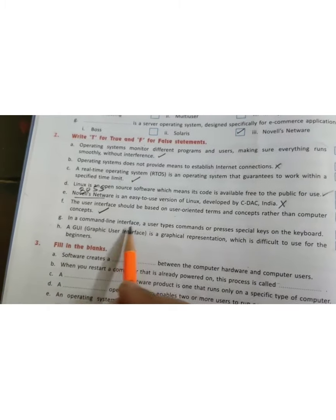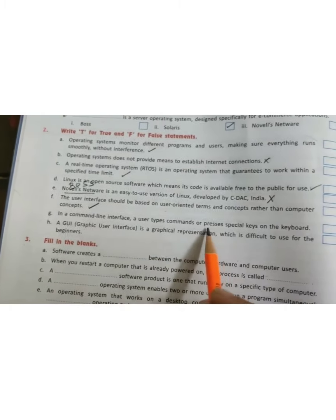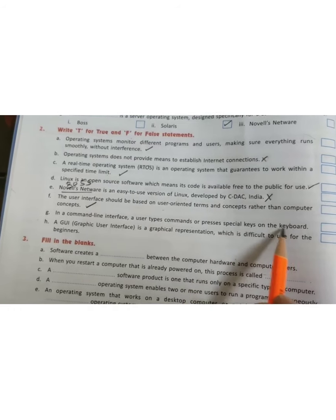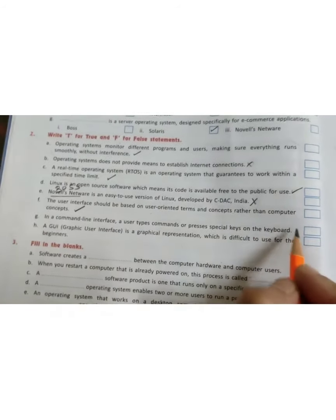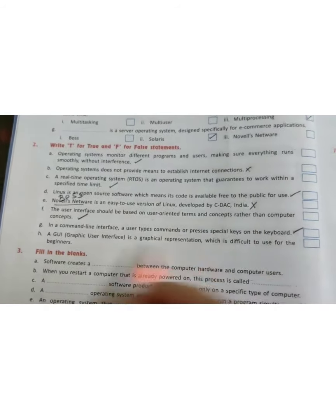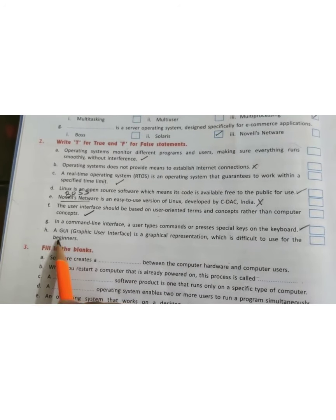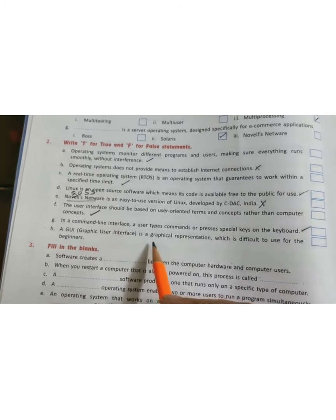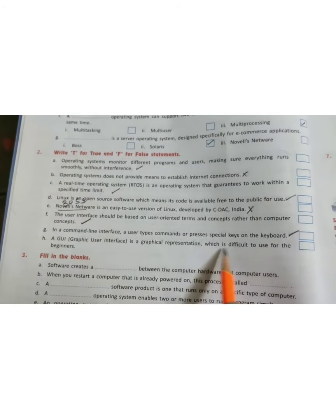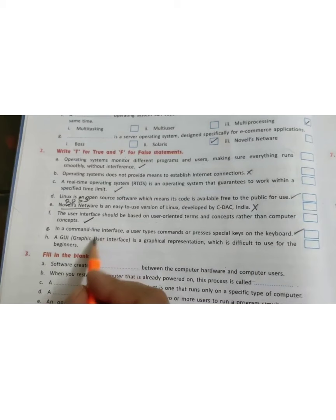In a command line interface a user types commands or presses special keys on the keyboard. This is also true. Last one we have, a graphical user interface or GUI is a graphical representation which is difficult to use for the beginners.